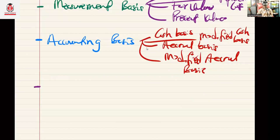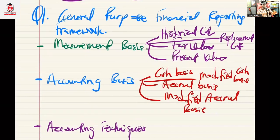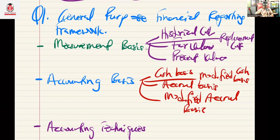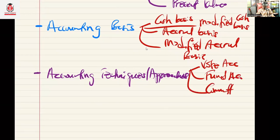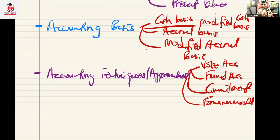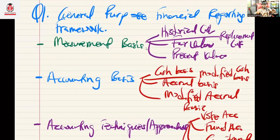The third thing we need to understand is accounting techniques or approaches. What I'm doing here is helping you understand the scope of the syllabus and prepare a study plan to use ahead of the main class. There are a couple of accounting techniques: we have vote accounting, fund accounting, commitment accounting, environmental accounting, and a couple of others. These are the ways financial statements are generally prepared by entities.